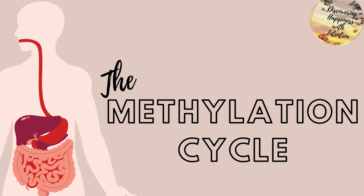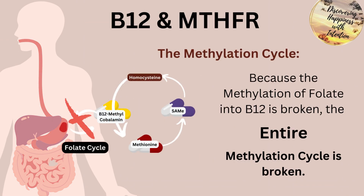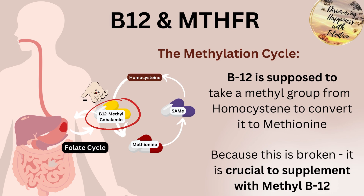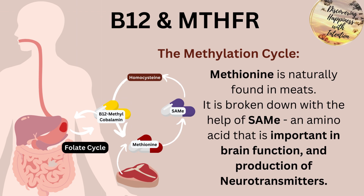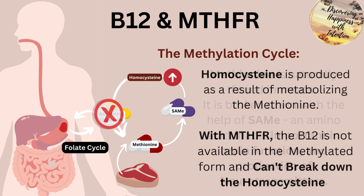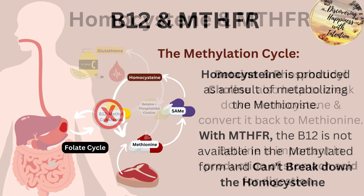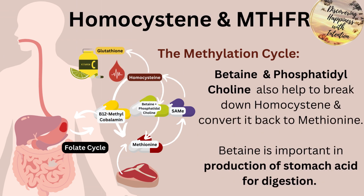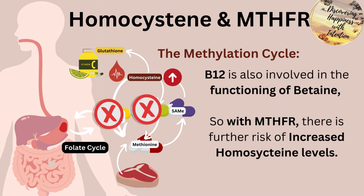The methylation cycle. Because the methylation of folate into B12 is broken, the entire methylation cycle is broken. B12 is supposed to take a methyl group from homocysteine to convert it to methionine. Because this is broken, it is crucial to supplement with methyl B12 if you have MTHFR. Methionine is naturally found in meats and is broken down with the help of SAMe, an amino acid that's important to brain function and the production of neurotransmitters. Homocysteine is produced as the result of metabolizing methionine. With MTHFR, B12 is not available in the methylated form and cannot break down homocysteine. Betaine and phosphatidylcholine also help break down homocysteine and convert it back to methionine, and B12 is also involved in the functioning of betaine. With MTHFR, there is further risk of increased homocysteine levels.